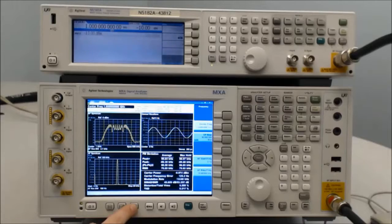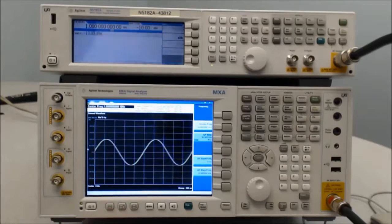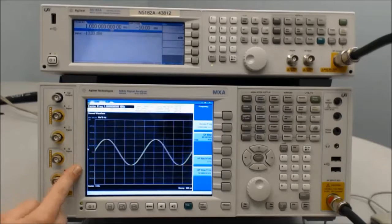In the demodulation window, we can expand it and see the FM deviation going from 100 kHz to minus 100 kHz.